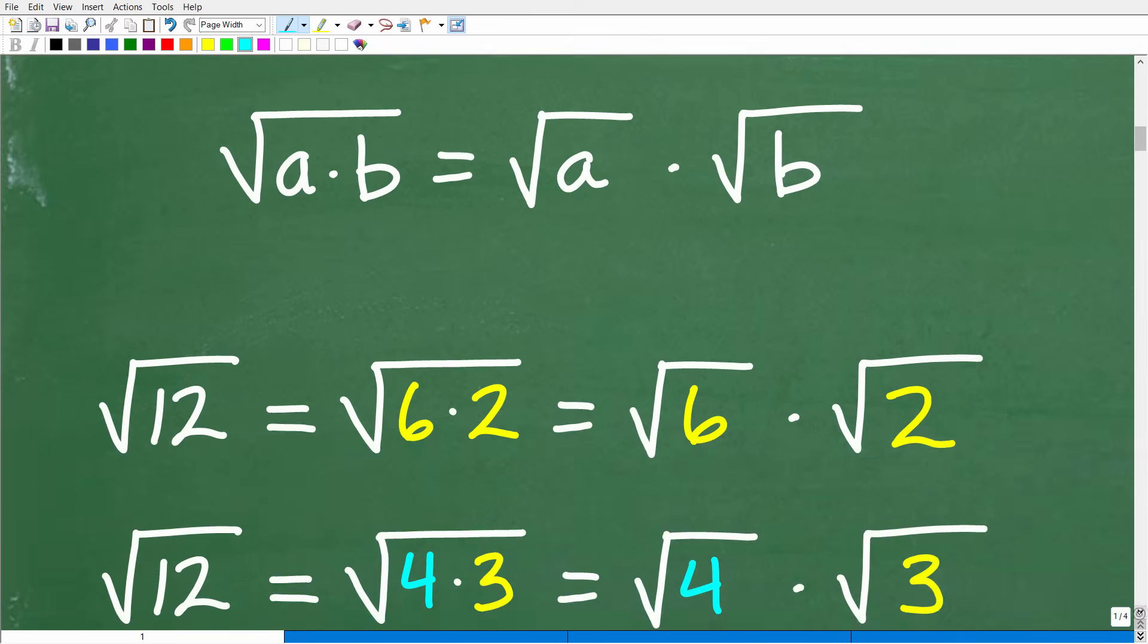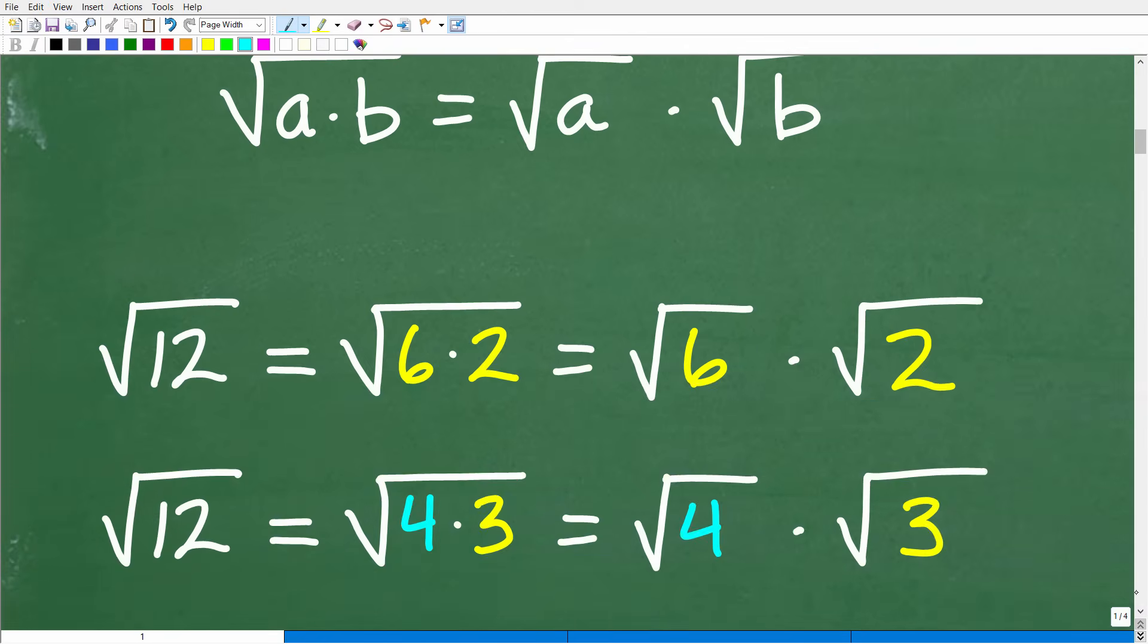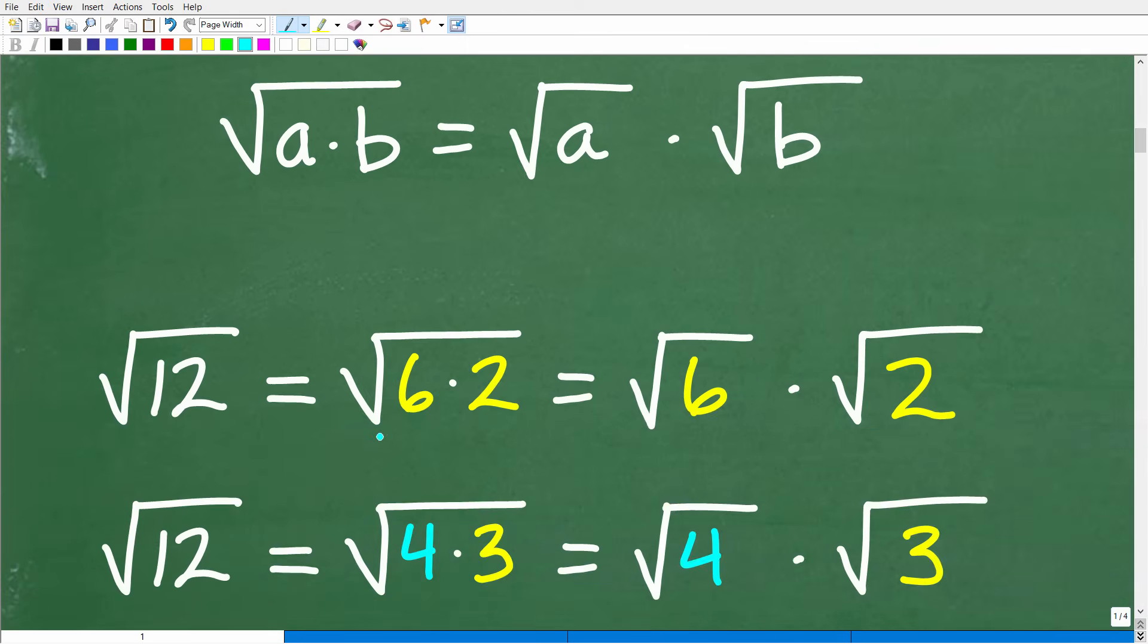So let's go ahead and do this problem with this property in mind. The square root of 12, I can think of it as the square root of its factors. So 12 is equal to 6 times 2. 6 and 2 are factors of 12. So the square root of 12 is the same thing as the square root of 6 times 2. So I can break up this one big square root into two individual square roots: the square root of 6 times the square root of 2.